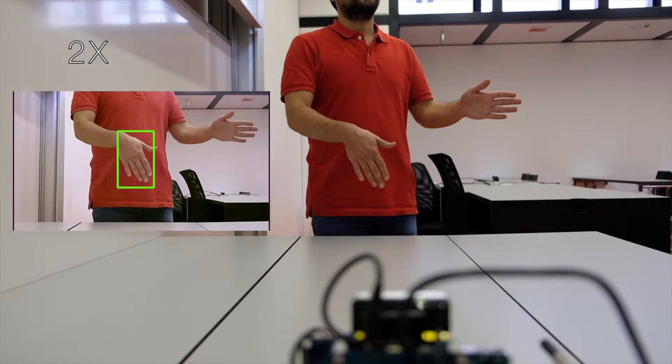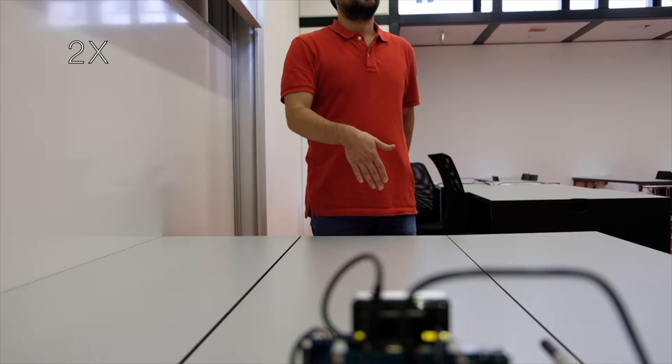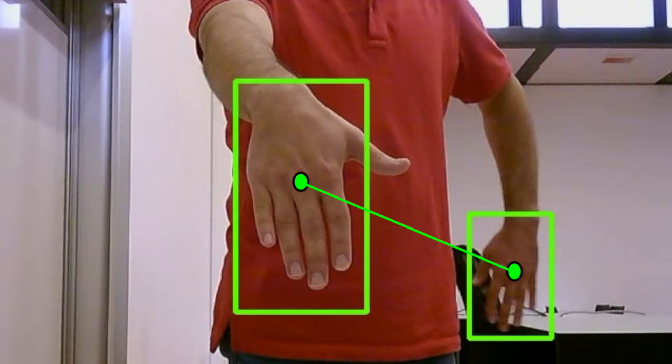We implemented two optimization tricks to make it better. One is to compute the Euclidean distance between the center of the two bounding boxes, because hands shouldn't go too far between frames. Also for the same reason, the width of the two boxes shouldn't vary too much.